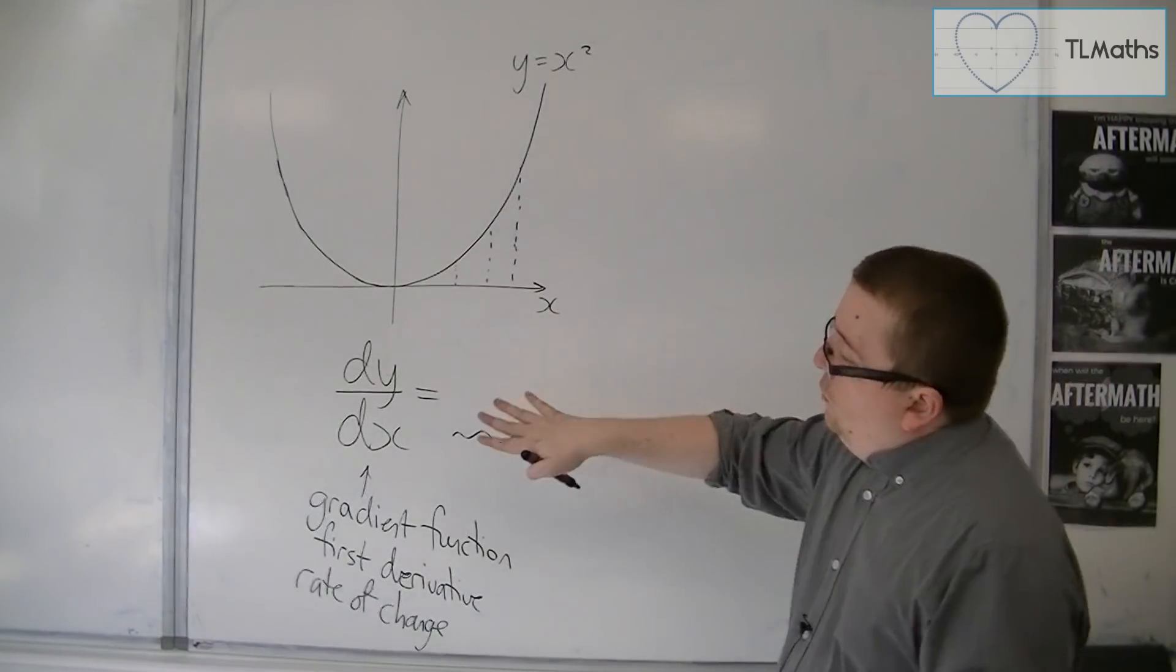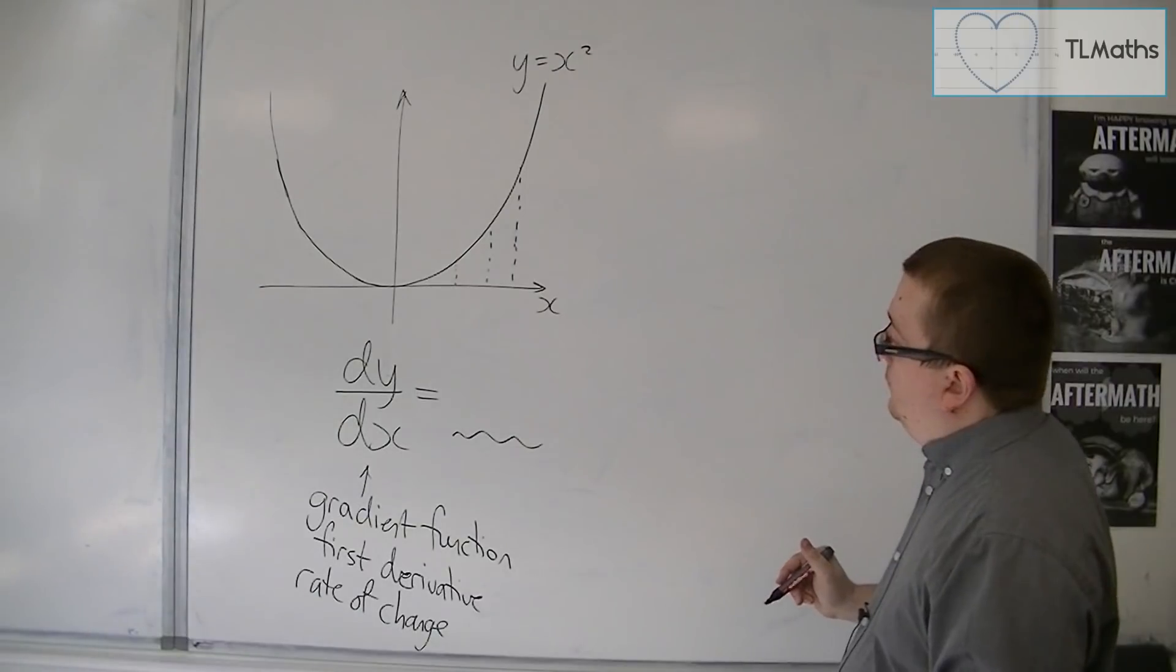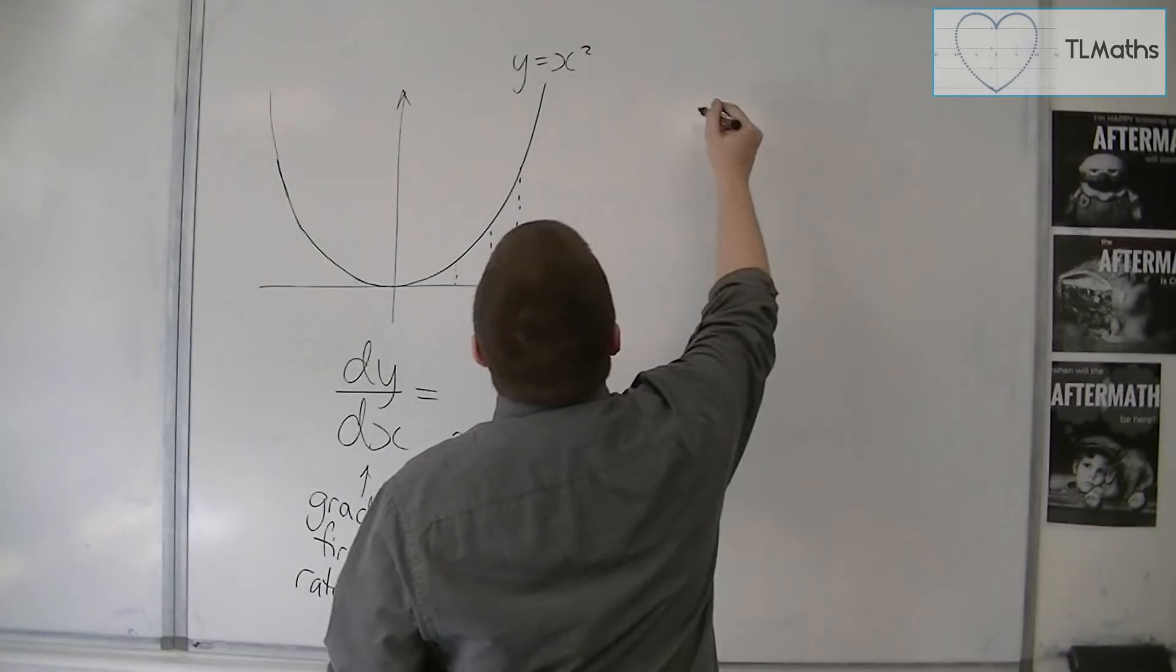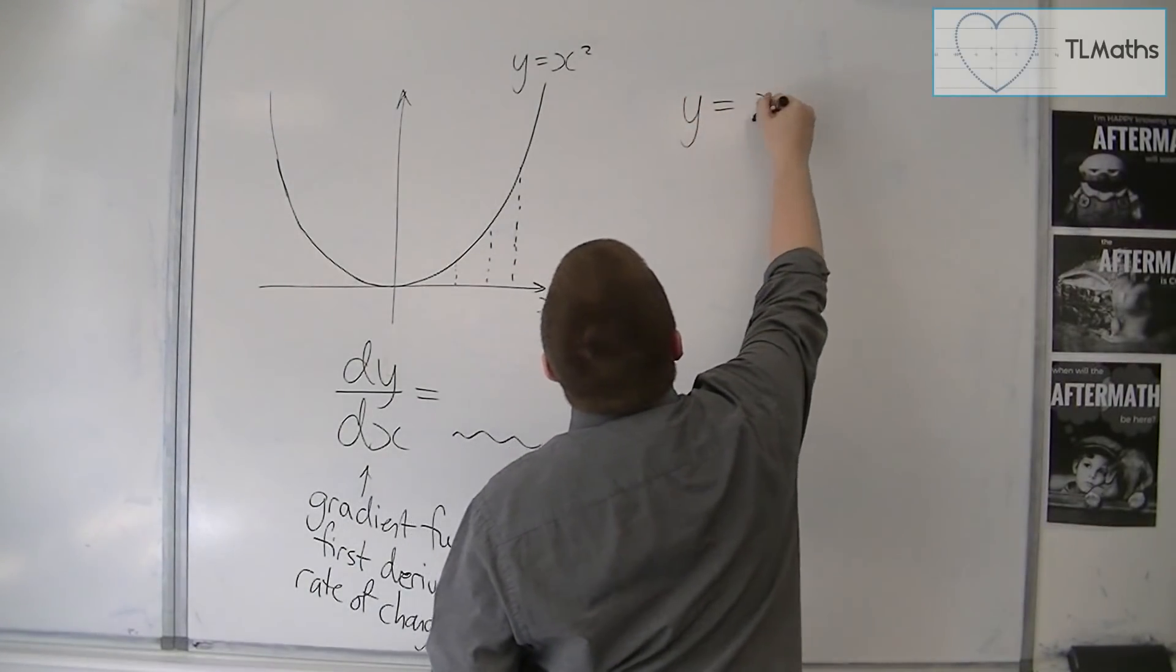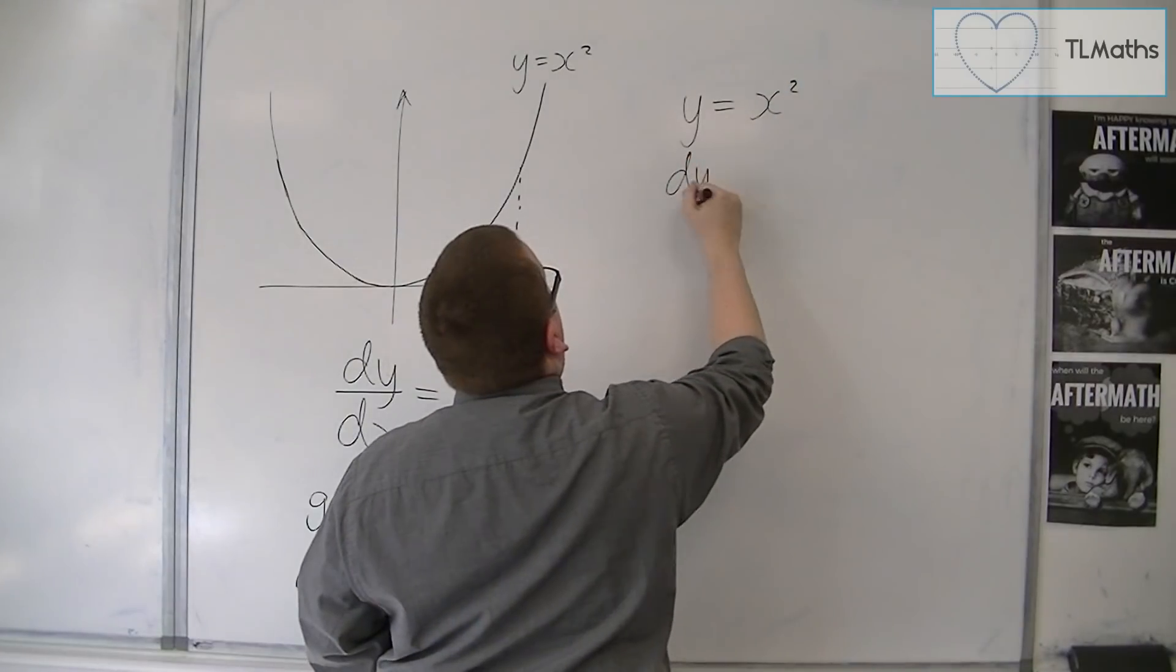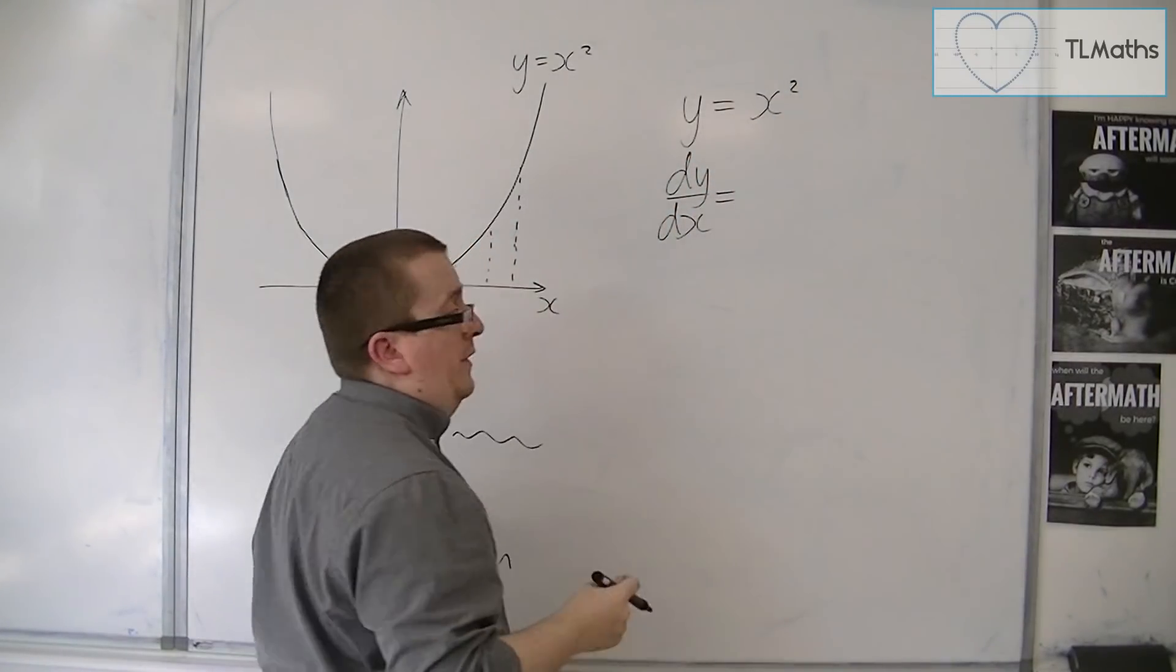So there's dy by dx equals, if you start with a y. So if you know that y is equal to x squared, then dy by dx will be written as something.